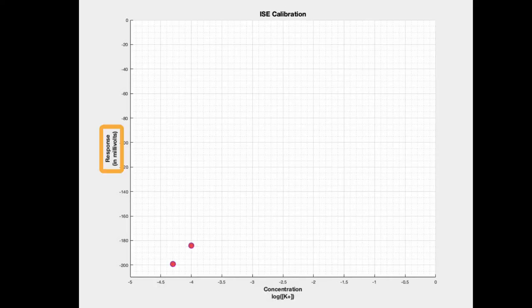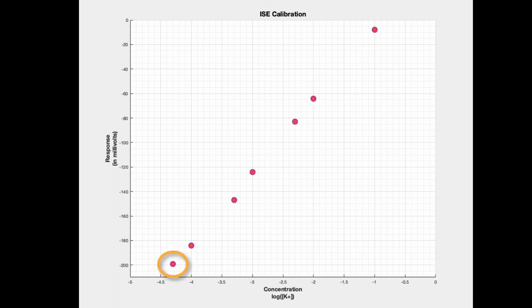By plotting the potential of the standard solutions as a function of the log of their concentration, we can construct a calibration curve. The first standard measured should always be the lowest concentration, then move on to the next most dilute solution with each subsequent measurement.